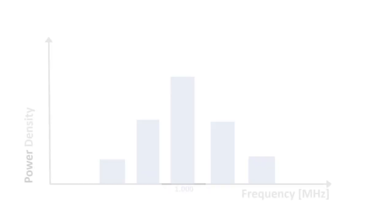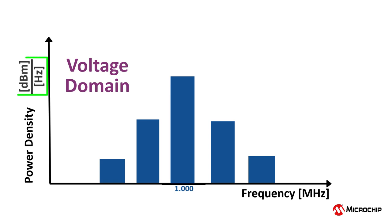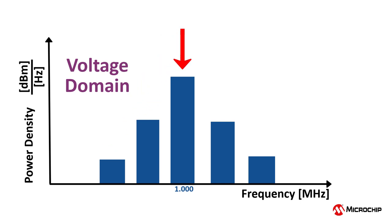Recall from the previous video that in the voltage domain, the spectral power density of a clock can be described in terms of watts per hertz, or more commonly in terms of dBm per hertz, where dBm is simply the power of the signal relative to a 1 milliwatt signal. In other words, the power of a clock relative to a 1 milliwatt clock is put into frequency buckets, which are then used to create a voltage domain spectral power density plot.